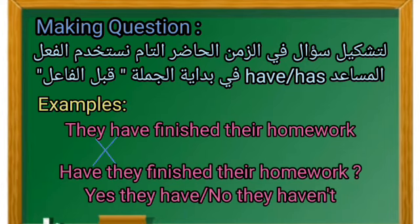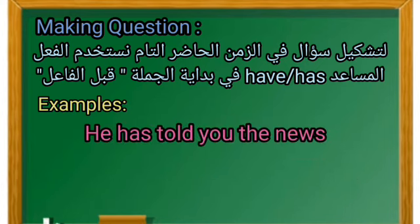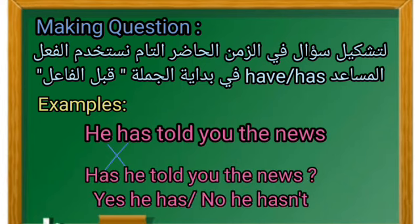مثال آخر: He has told you the news — هو قد أخبرك الأخبار. لنحوّل هذه الجملة إلى سؤال بعملية التبديل بين الفعل المساعد والفاعل، فتصبح: Has he told you the news? — هل هو أخبرك الأخبار؟ الجواب: Yes, he has أو No, he hasn't.